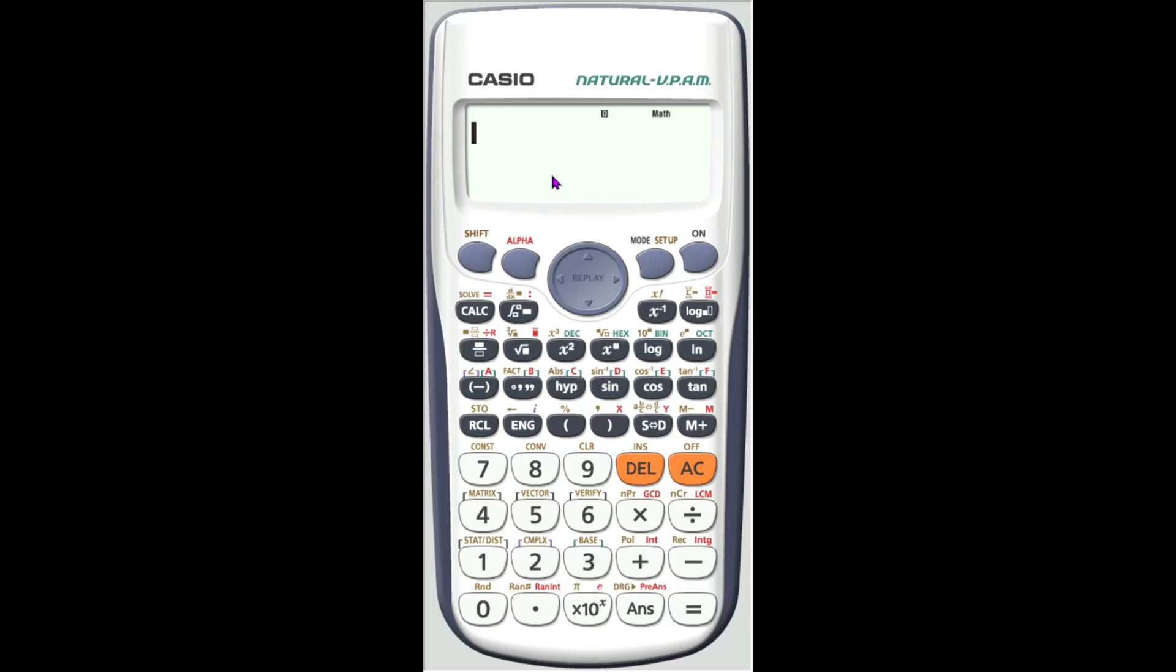Suppose you want to obtain the factors using your calculator. Let's say you have forgotten the special product rules involving the difference of two squares. You can go to mode and then look for EQN in your calculator, which stands for equation.